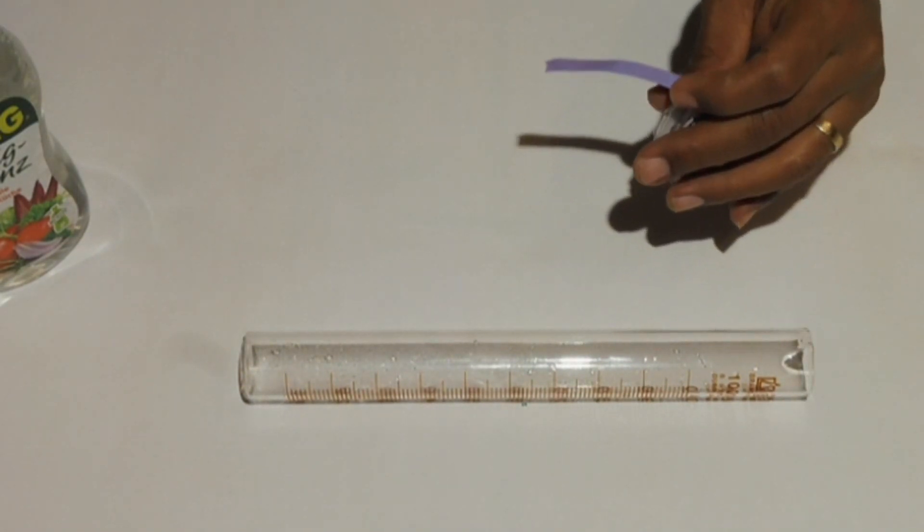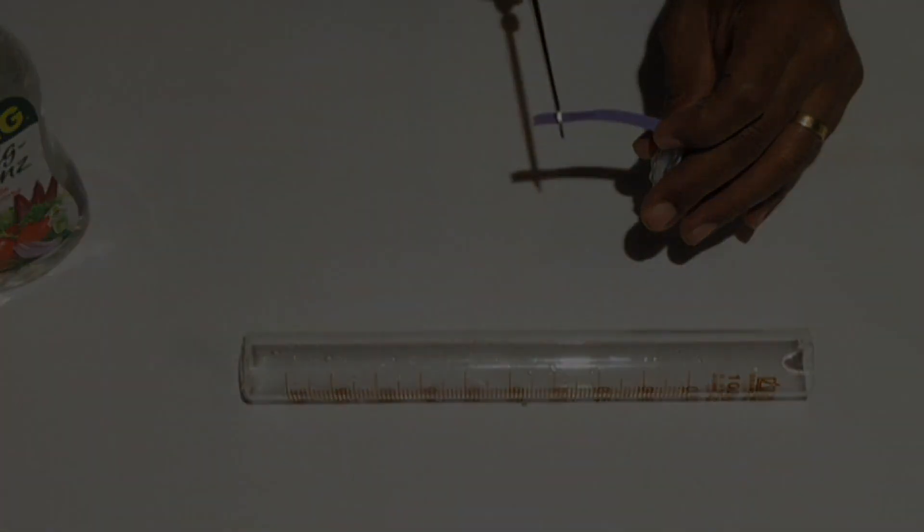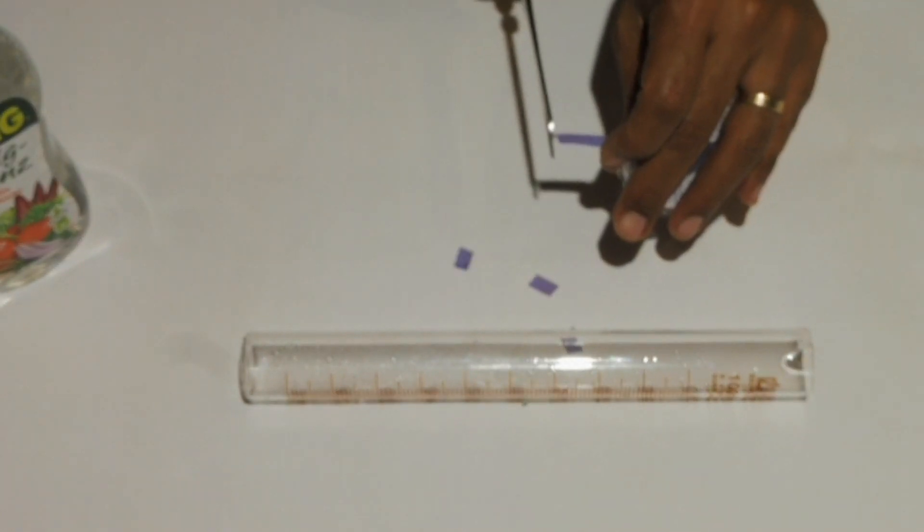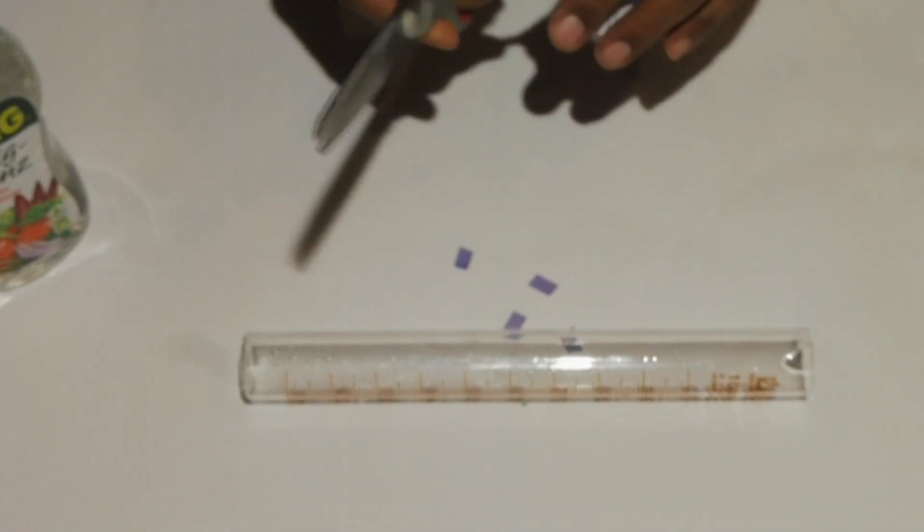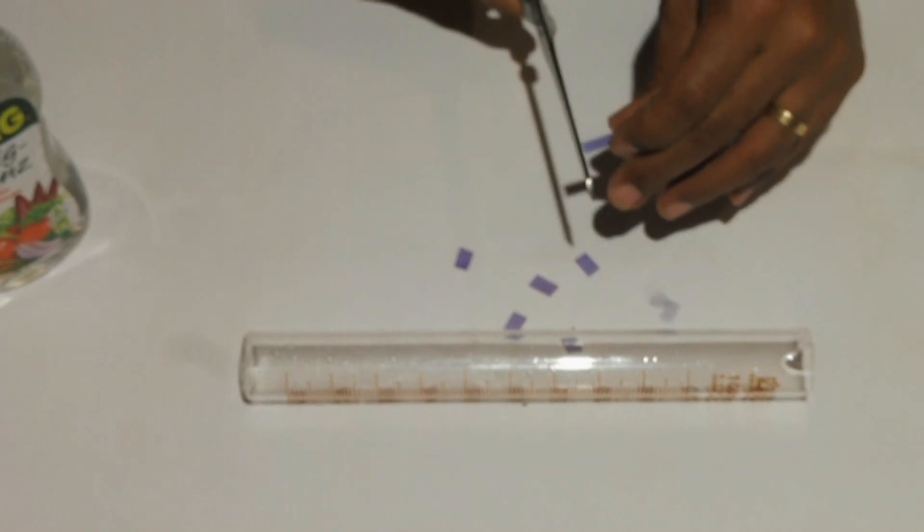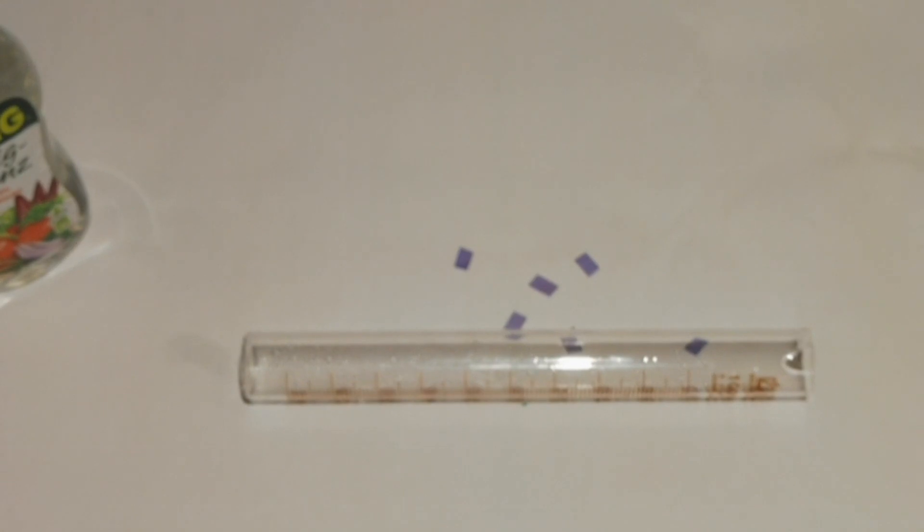We will need to cut the blue litmus paper into small pieces. We will need to know how many pieces of litmus paper can fit in the cylinder to get reasonable results. For our cylinder, six pieces fit better.